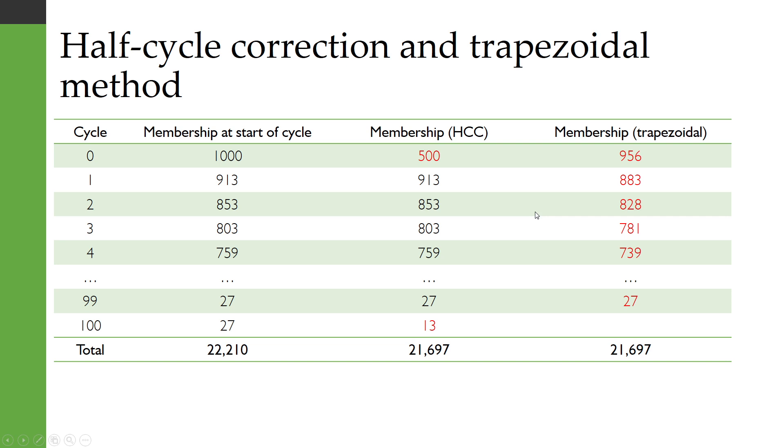And so let's imagine that we have an actual model here, we've calculated numbers, we start off with a thousand people. With the half cycle correction we would say there were only 500 in that first cycle and then we continue down and in that final cycle instead of 27 halve it and we get 13.